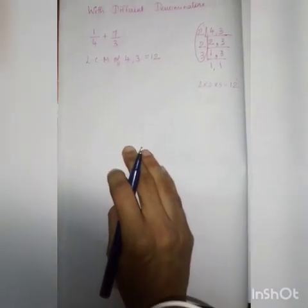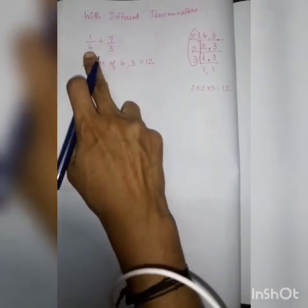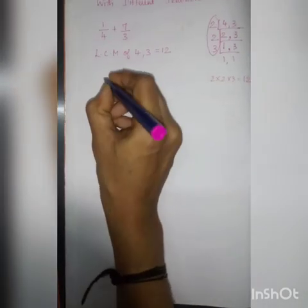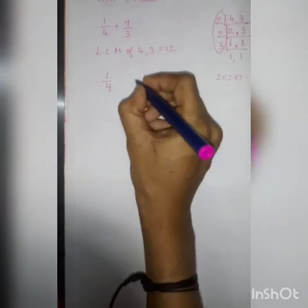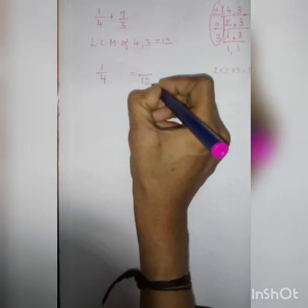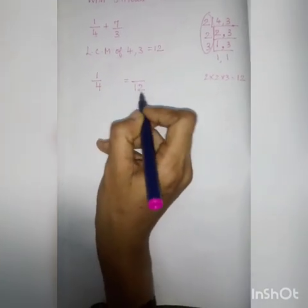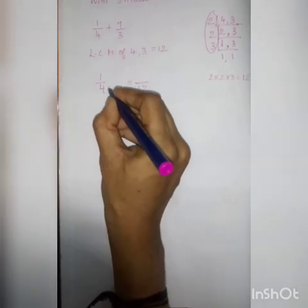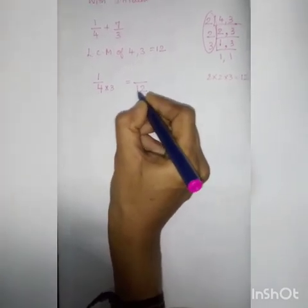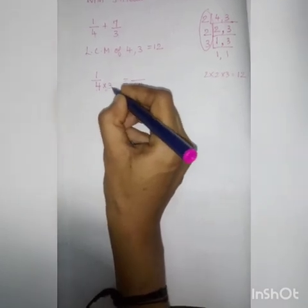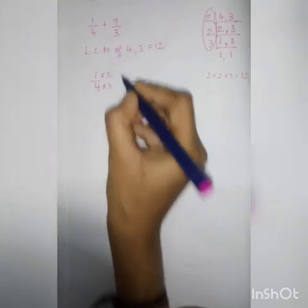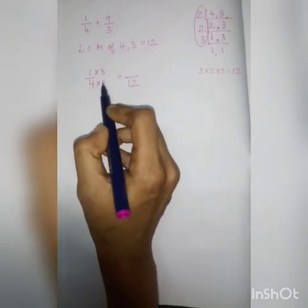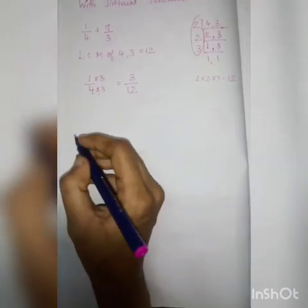The LCM of the two denominators 4 and 3 is 12, so our denominator should be this LCM value. I am going to convert the two fractions individually. For 1 by 4: I need denominator 12. In the 4 times table, how many times does 3 appear? Four 3s are 12. So I multiply the denominator by 3, and I must multiply the numerator by 3 also. 1 times 3 is 3. So 1 by 4 becomes 3 by 12.